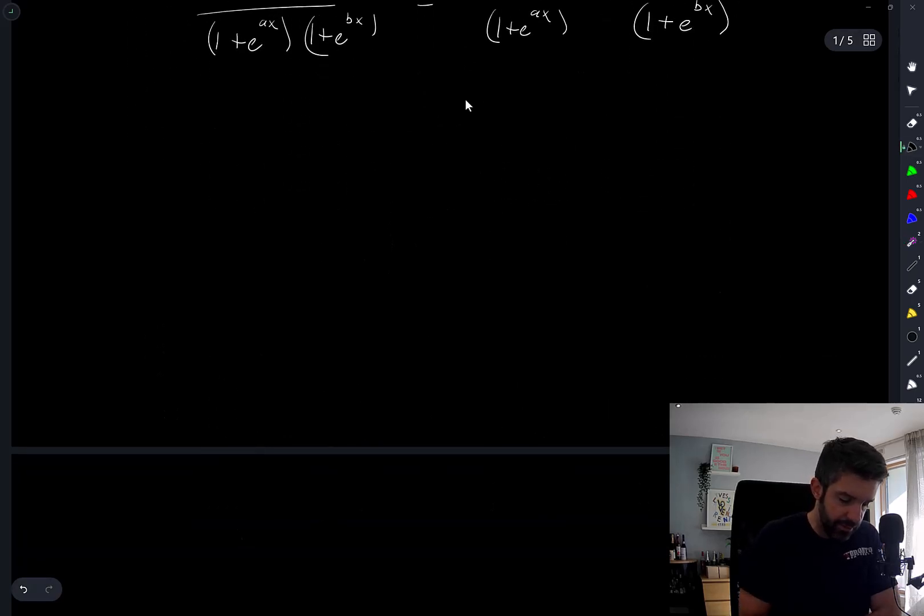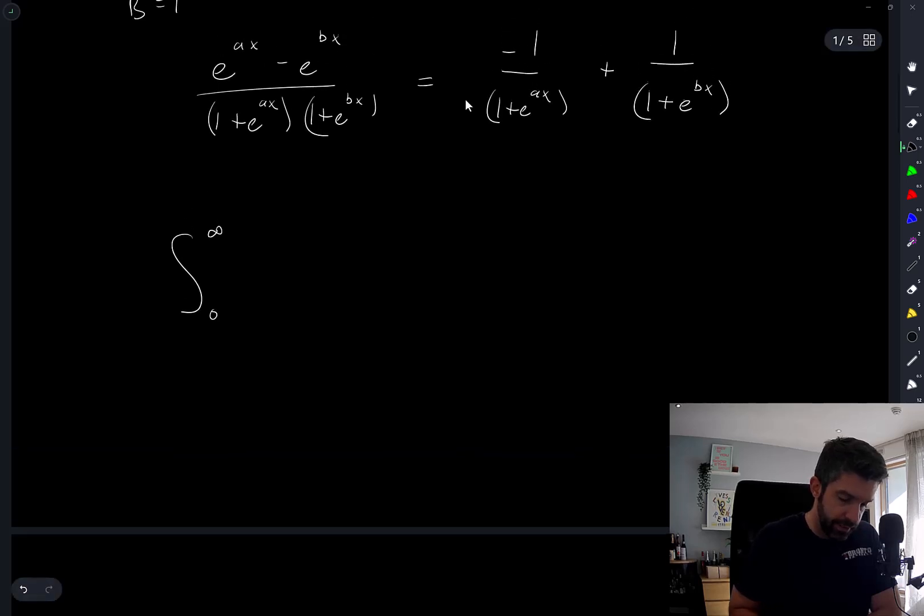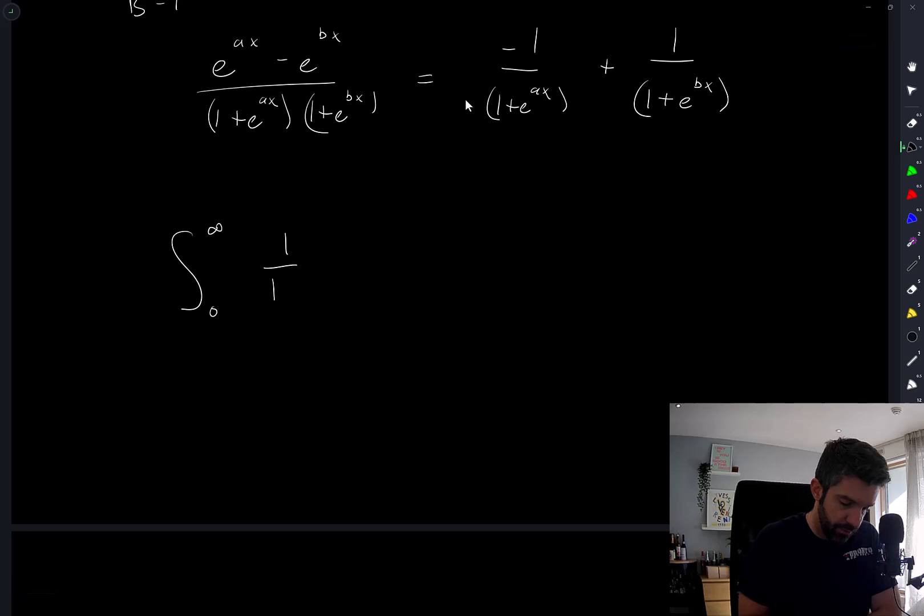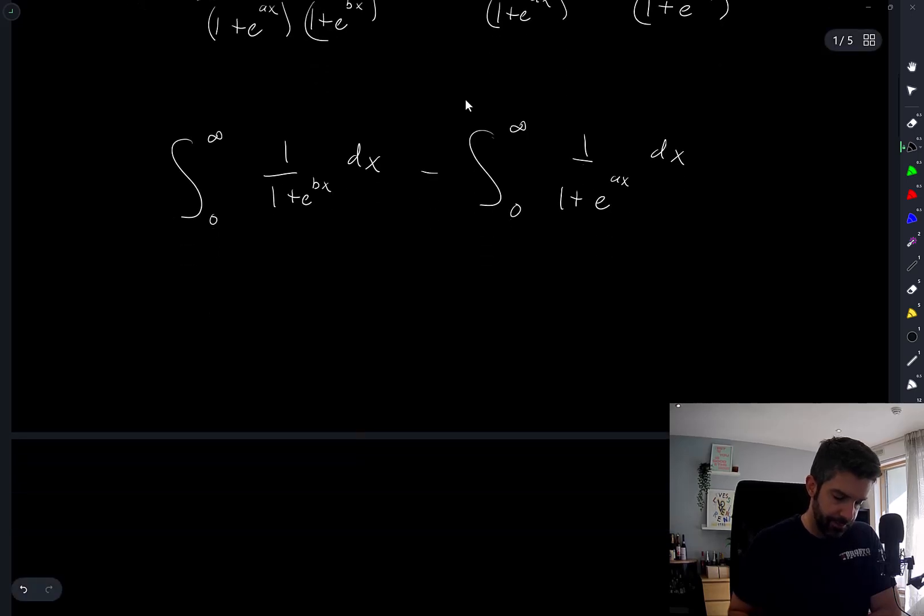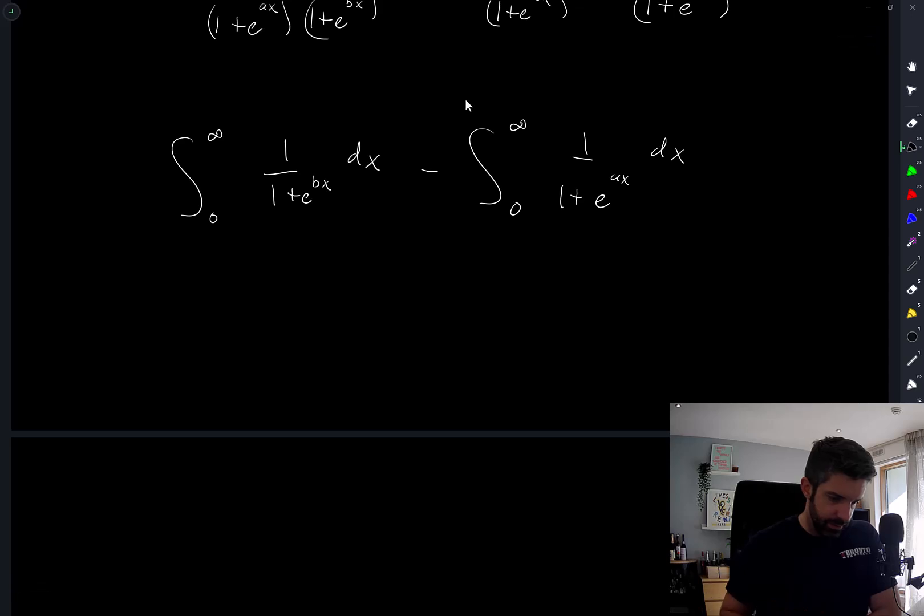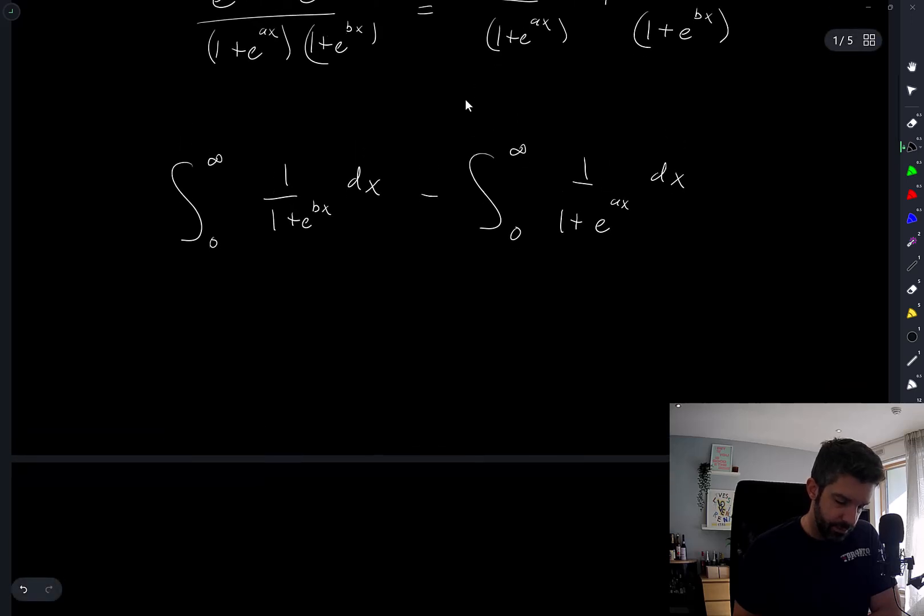Anyway, we now have this integral, we have an integral from zero to infinity of one over one plus e to the bx dx minus integral from zero to infinity of one over one plus e to the ax dx. Is this easy to do?